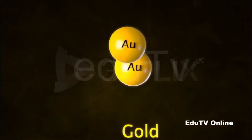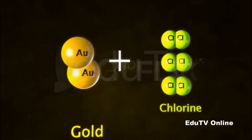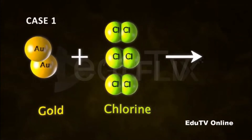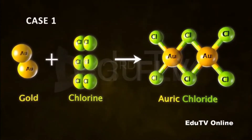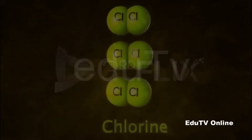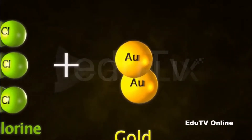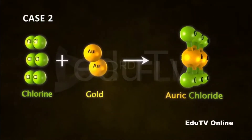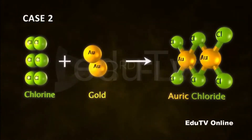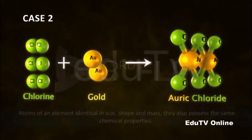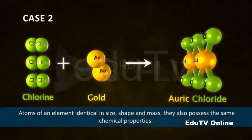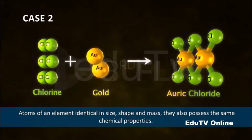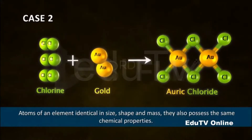Atoms of gold react with atoms of chlorine and they all form the same compound, auric chloride. So Dalton, in his theory, proposed that not only are atoms of an element identical in size, shape, and mass, they also possess the same chemical properties.